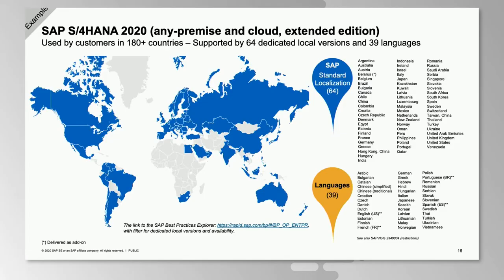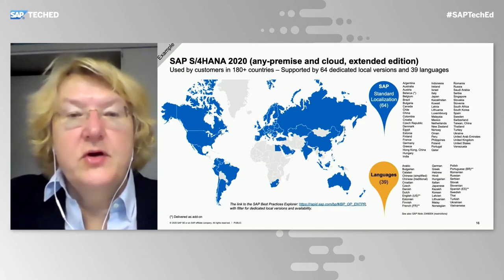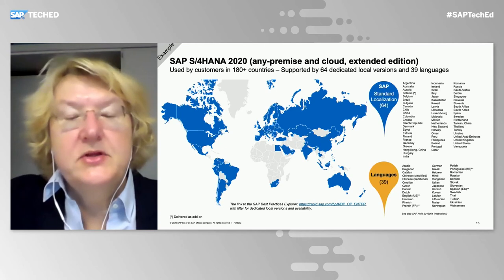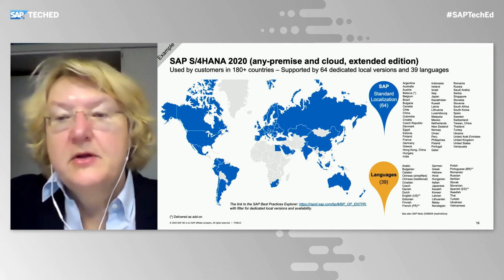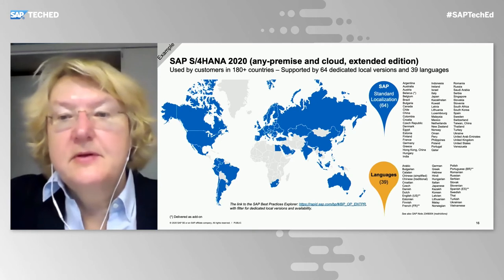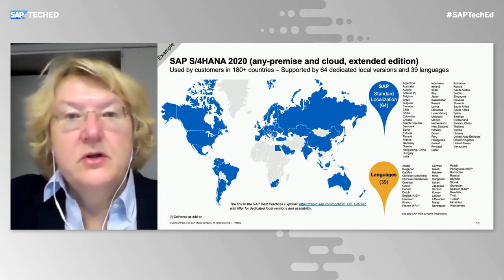Looking at S/4HANA 2020 on-premise and cloud, we see a remarkable coverage of standard localization across 64 countries. We have 39 languages in which S/4HANA 2020 is offered to customers, enabling them to run in countries depending on the local language.